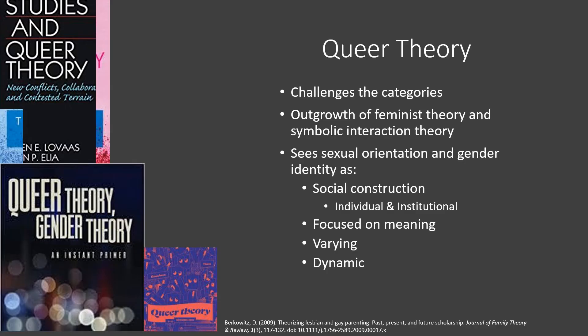Queer theory is similar to gender theory — a combination of feminist frameworks and symbolic interaction theory, which focuses on meaning, role, and identity. Queer theory definitely challenges binaries and categories, and sees sexual orientation and gender identity as social constructions influenced by both individual experience and institutional factors. It's focused on meaning, and people might make different meaning about identities around sexual orientation and gender, which can vary across people.